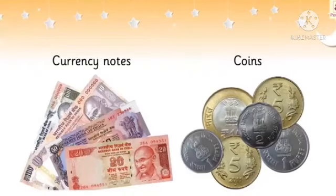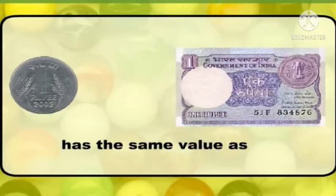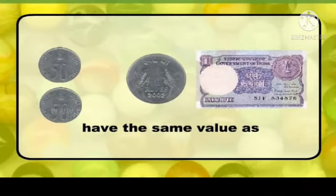On each coin and currency note, there is a number that shows its value. A 1 rupee coin has the same value as a 1 rupee note. Two 50 paise coins have the same value as a 1 rupee coin or a 1 rupee note.